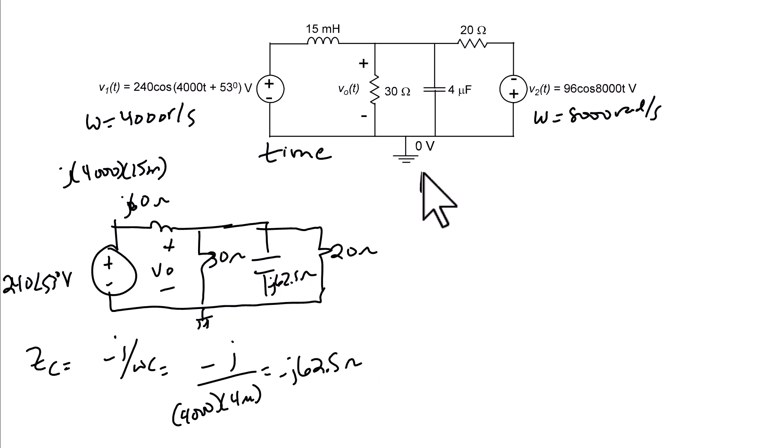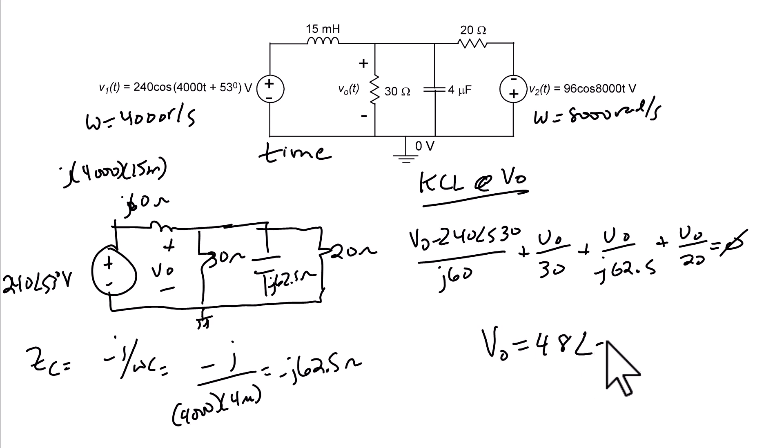And we're going to use KCL to solve for V0. So we're going to do KCL at that top node, which is V0. So we're going to have V0 minus 240 angle 53 degrees divided by J 60 plus V0 over 30 plus V0 over negative J 62.5 plus V0 over 20 equals zero. So we have one equation and one unknown. And when we solve, we get that V0 is equal to 48 with an angle of negative 36.5 degrees.